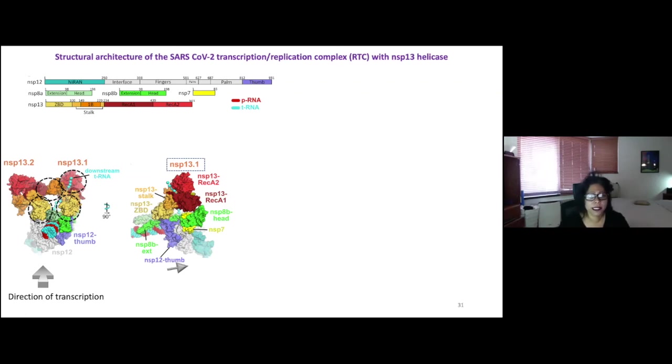This is a view turned 90 degrees now. And what we are focusing on is NSP13-1. What I wanted you to note is that the helicase is actually on the downstream end of the active site. So the active site would be here, right where the thumb is.